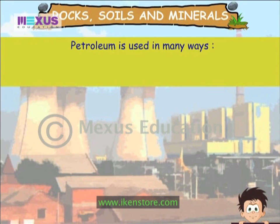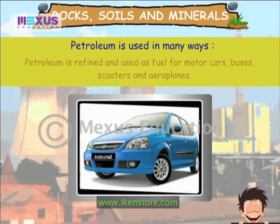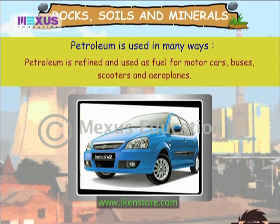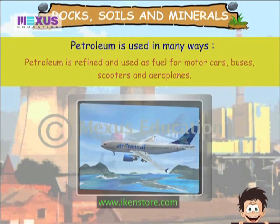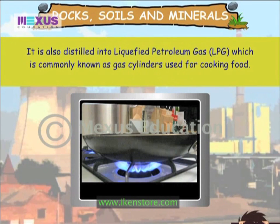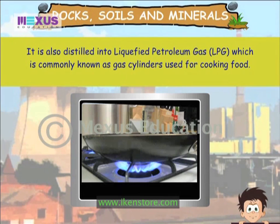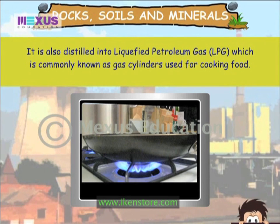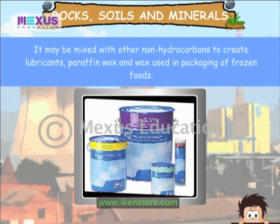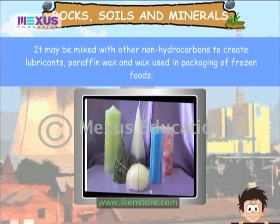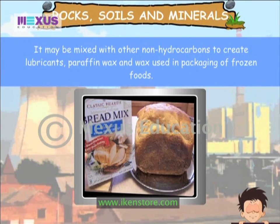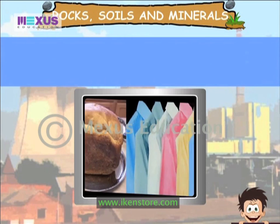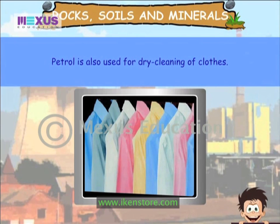Petroleum is used in many ways. It is refined and used as fuel for motor cars, buses, scooters and airplanes. It is also distilled into liquefied petroleum gas or LPG, which is commonly known as gas cylinders, used for cooking food. It may be mixed with other non-hydrocarbons to create lubricants, paraffin wax and wax used in packaging of frozen foods. Petroleum is also used for dry cleaning of clothes.